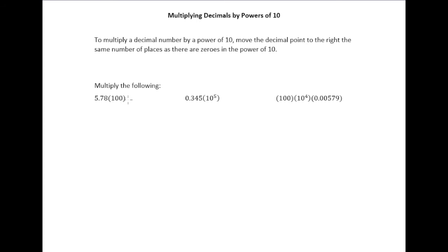Let's see what this rule means in this first example. If I have 5.78 times 100, since there are two zeros in 100, I'm going to take the decimal point and move it two places to the right in 5.78. So 5.78 becomes 578.